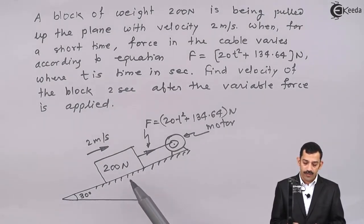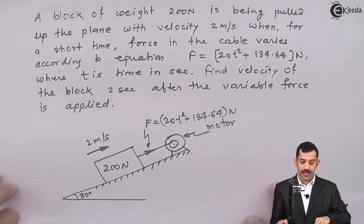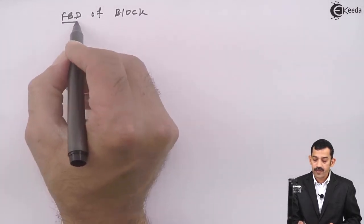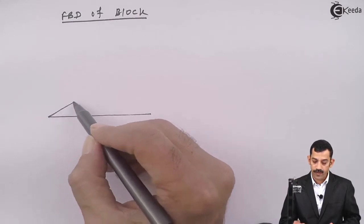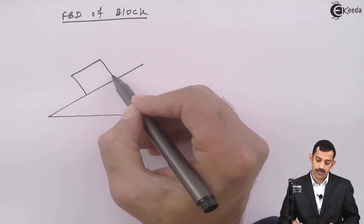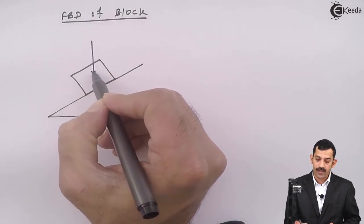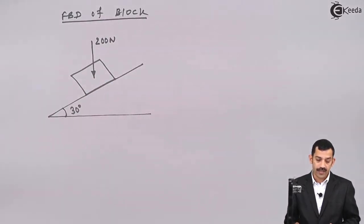Now, if we draw the free body diagram of this block, the initial conditions are: initial velocity is 2 meters per second, and we need to find the velocity of the block 2 seconds after the variable force is applied. First, we draw the free body diagram of this block. The block is in motion on an inclined plane. It is subjected to a variable force as well as weight acting in the downward direction. The weight of this block is given as 200 Newton, and the inclination of the plane is 30 degrees.